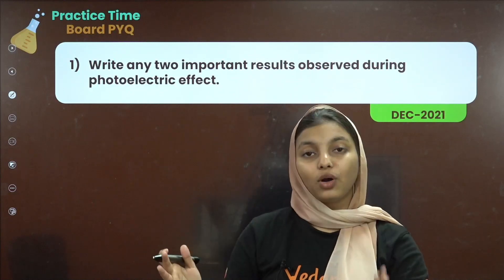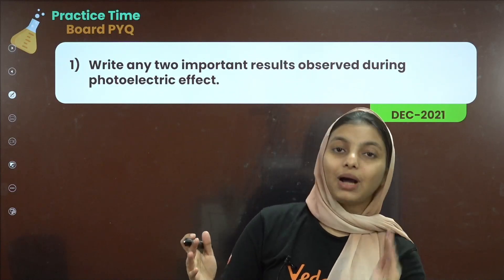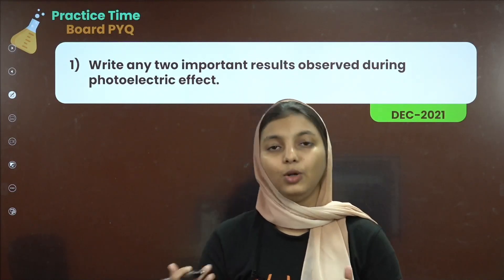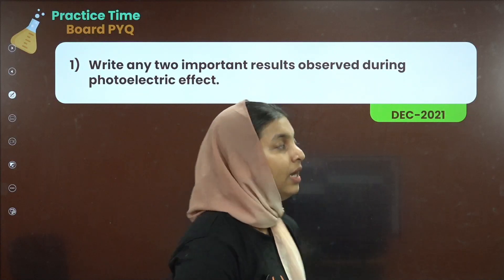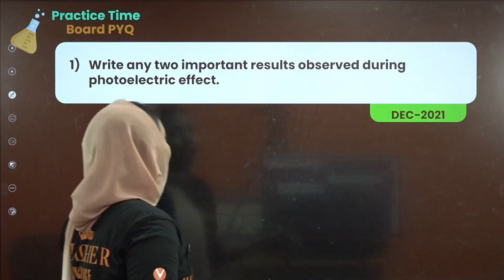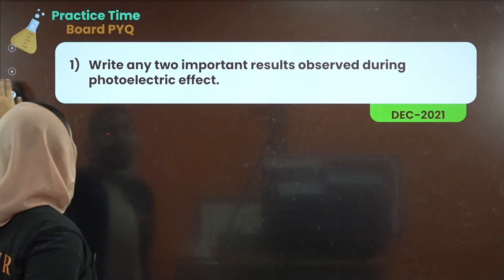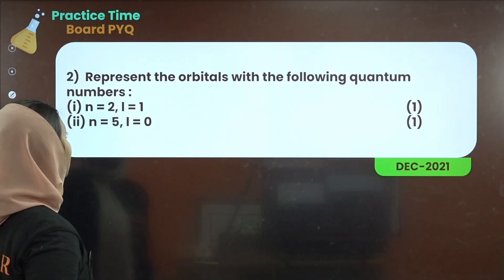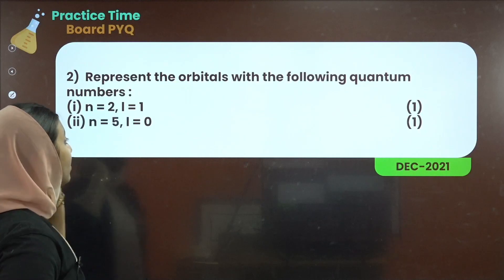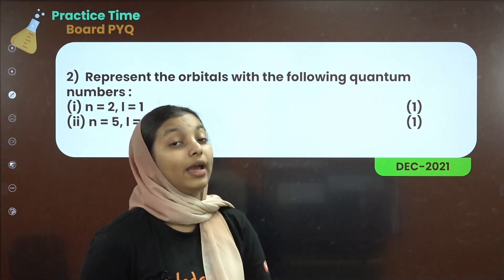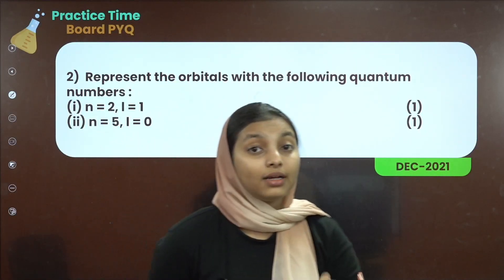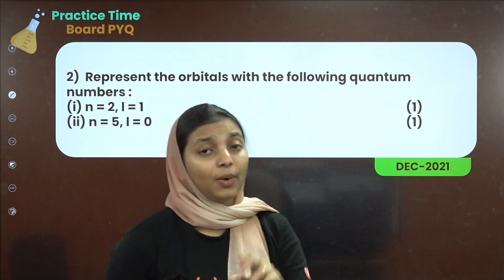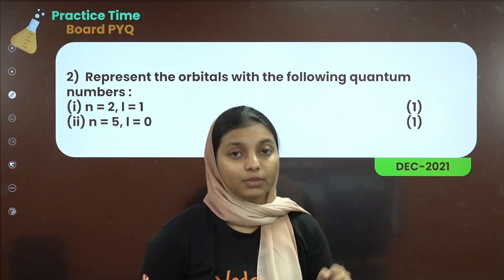We can see that the electrons will be ejected. That is our first question. Next: represent the orbitals with the following quantum numbers. Since we know that quantum numbers are a very important part of the structure of atoms, let's review them.